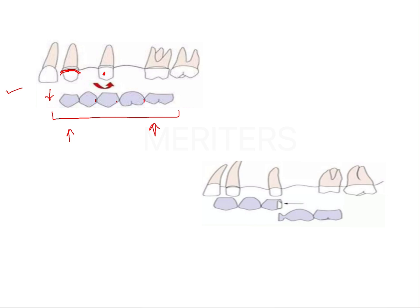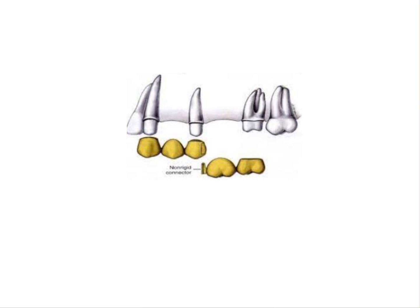The way to deal with this is to use a non-rigid connection, which acts as a stress breaker providing even stress distribution. As you can see in this image, the FPD is split into two parts and connected in the middle by a key that engages into a keyway. The key seats into the keyway and then the prosthesis is cemented. This improves stress distribution and avoids the fulcrum motion.